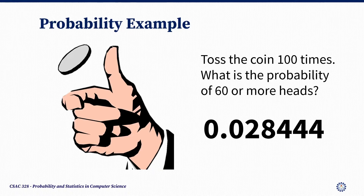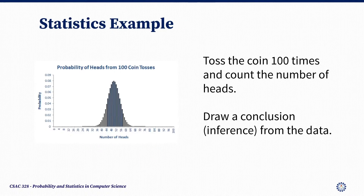Let's take a look at an example. Say, for instance, you toss a coin 100 times. What is the probability of 60 or more heads? There is only one answer — about 0.28444 — and we will learn how to compute it.